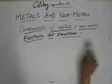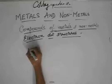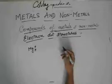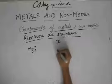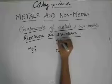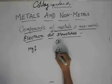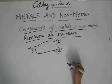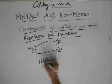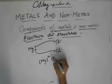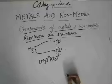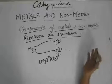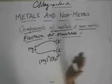Now for the electron dot structure: magnesium has two valence electrons. Since the compound is MgCl₂, you need two chlorine atoms, each with seven electrons. Magnesium donates one electron to each chlorine atom, and it then becomes Mg²⁺, while you have two Cl⁻ ions. Remember: the notation Cl₂²⁻ does not mean the charges multiply — that is a very common mistake. It simply means two chlorine atoms with two minus charges distributed between them.